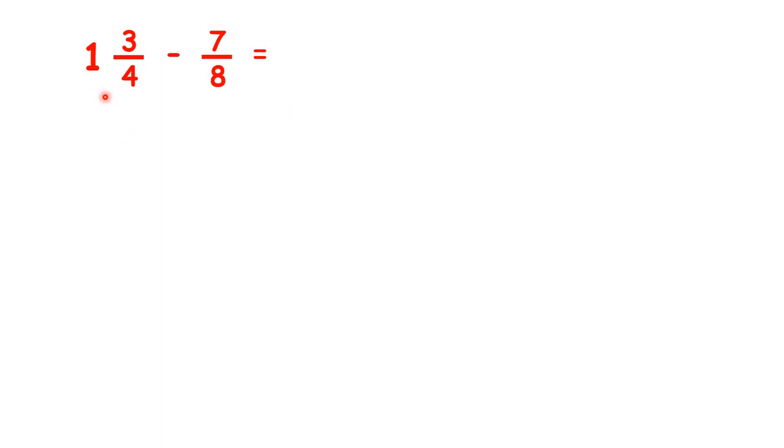Now here we have 1 and 3 quarters minus 7 eighths. Now subtraction is usually easier if we're subtracting from an improper fraction rather than a mixed number.